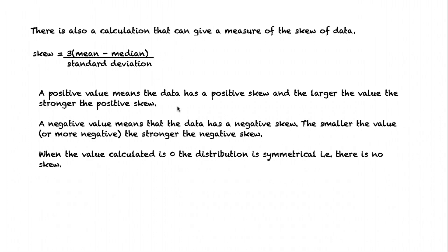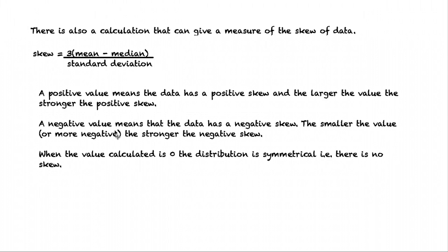There's also a calculation that can give a measure of the skew of data. Skew is equal to three times the mean minus the median, divided by the standard deviation. A positive value means the data has a positive skew, and the larger the value, the stronger the positive skew. A negative value means that the data has a negative skew, and the more negative that value, the stronger the negative skew. When the value calculated is zero, the distribution is symmetrical — there's no skew.